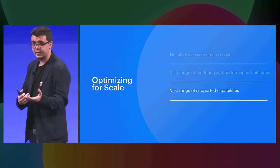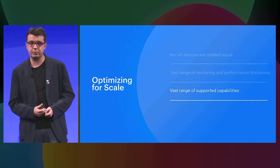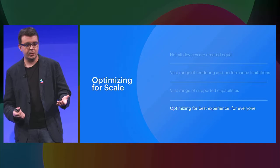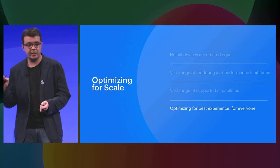We also have a vast range of supported capabilities. Say we want to deliver AR on a phone that doesn't support six-degree of freedom tracking — what do we do? Last but not least, we want to ensure the best experience for everyone, no matter whether you use a 2G or 4G connection, no matter whether you're using a low-end or high-end state-of-the-art phone — we want to make sure you experience AR everywhere.